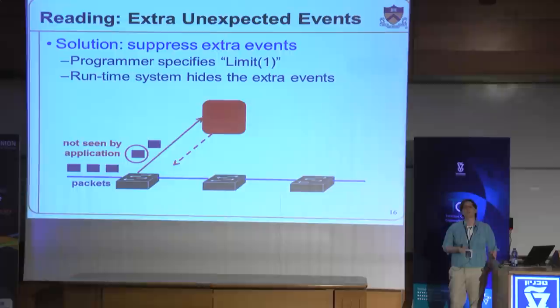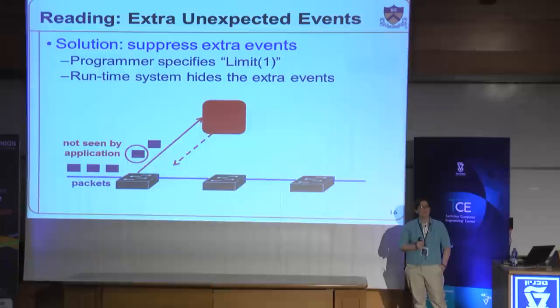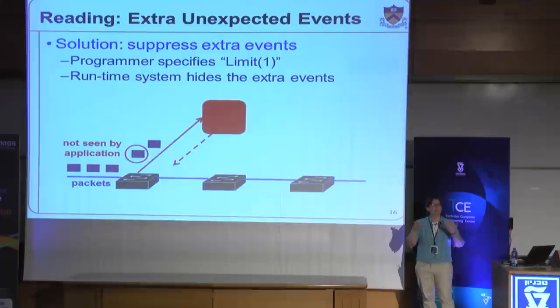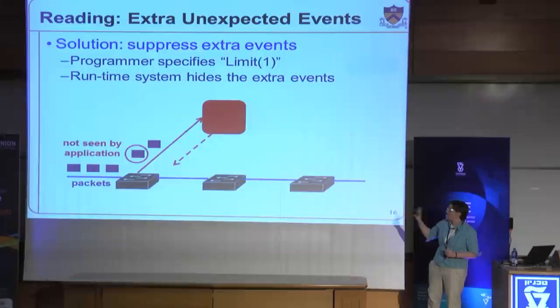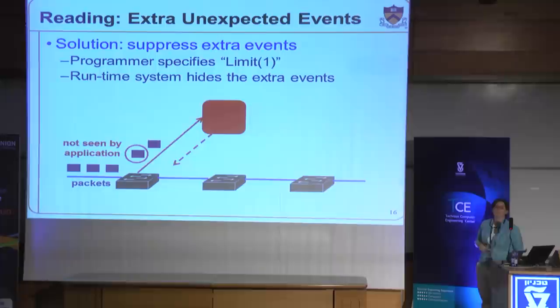We did a study at NSDI this year using model checking on a bunch of different OpenFlow applications written on top of the Knox operating system to find programming errors — and in fact this error was made over and over again. It's a very easy novice mistake to assume you have central and instantaneous control over the network and wrongly expect that packets you don't think you'll see won't come to the controller. I have a paper of my own that had a bug in my master's student's thesis exactly like this. These subtle mistakes might only manifest in corner cases where the timing of packets or delays between the switch and controller end up being different than expected.